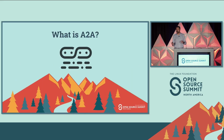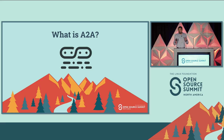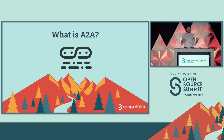I wanted to start with what is A2A — what is agent-to-agent? The one line here is basically what we're looking for is an open protocol to determine how agents can communicate together over a network.